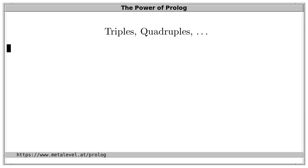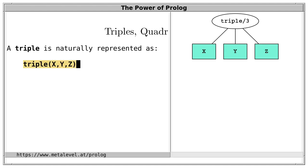Now, what about triples, quadruples, quintuples, and so on? Well, a triple, for example, is naturally represented as triple of x, y, and z. That's a term with functor name triple and arity 3.